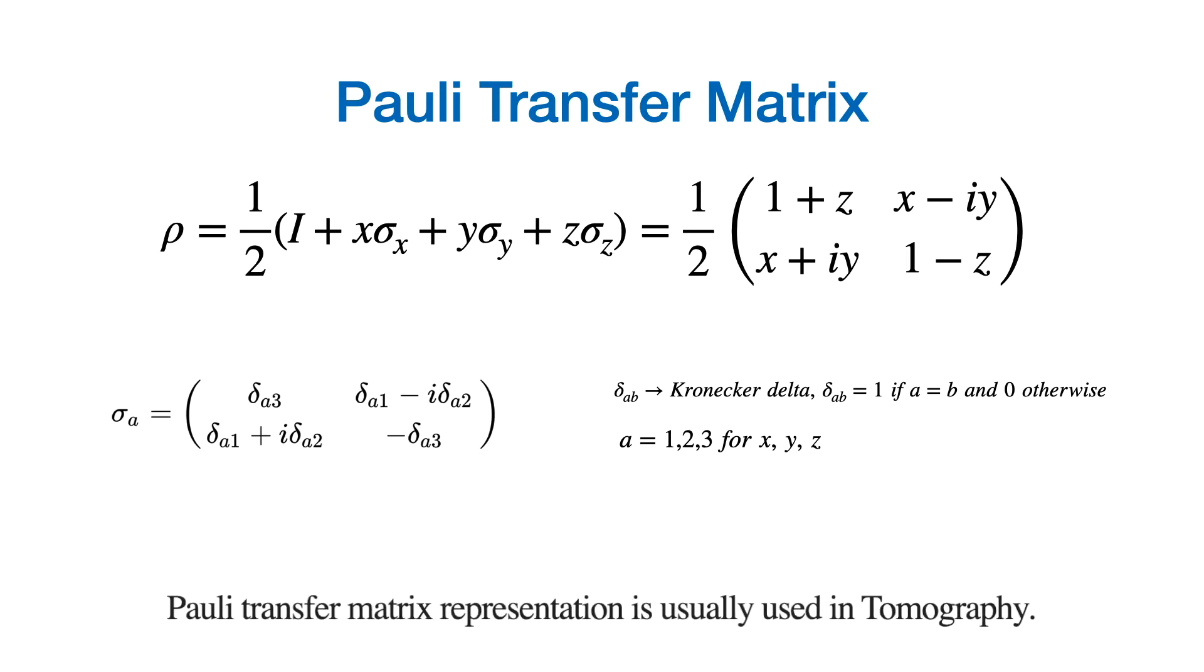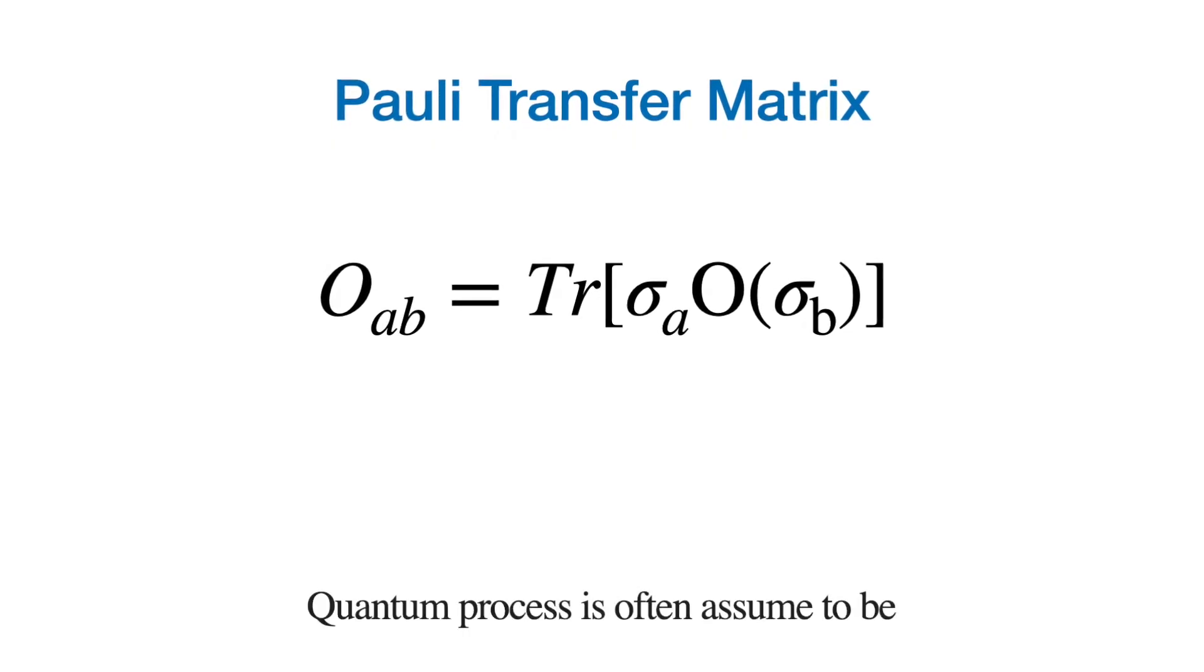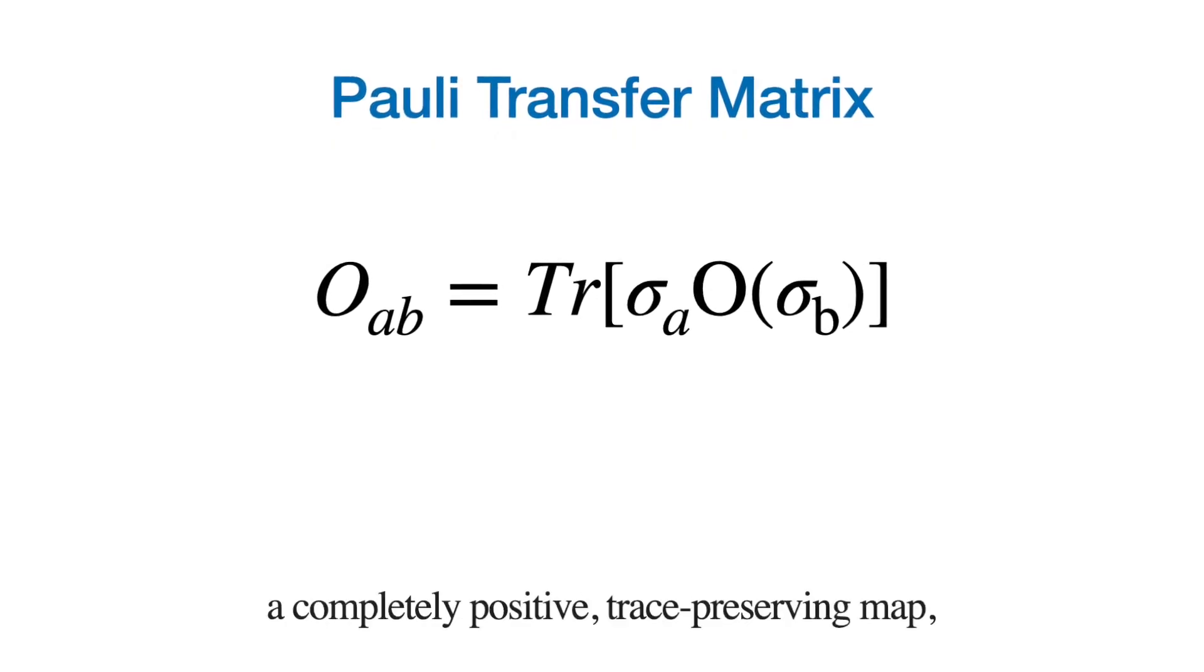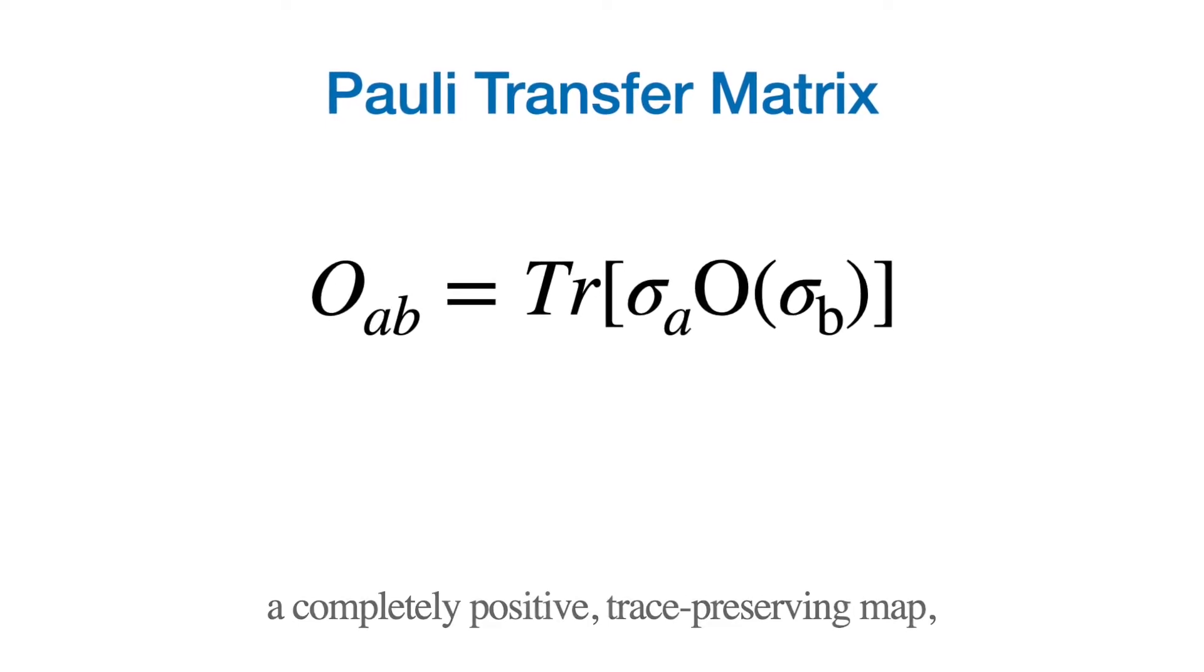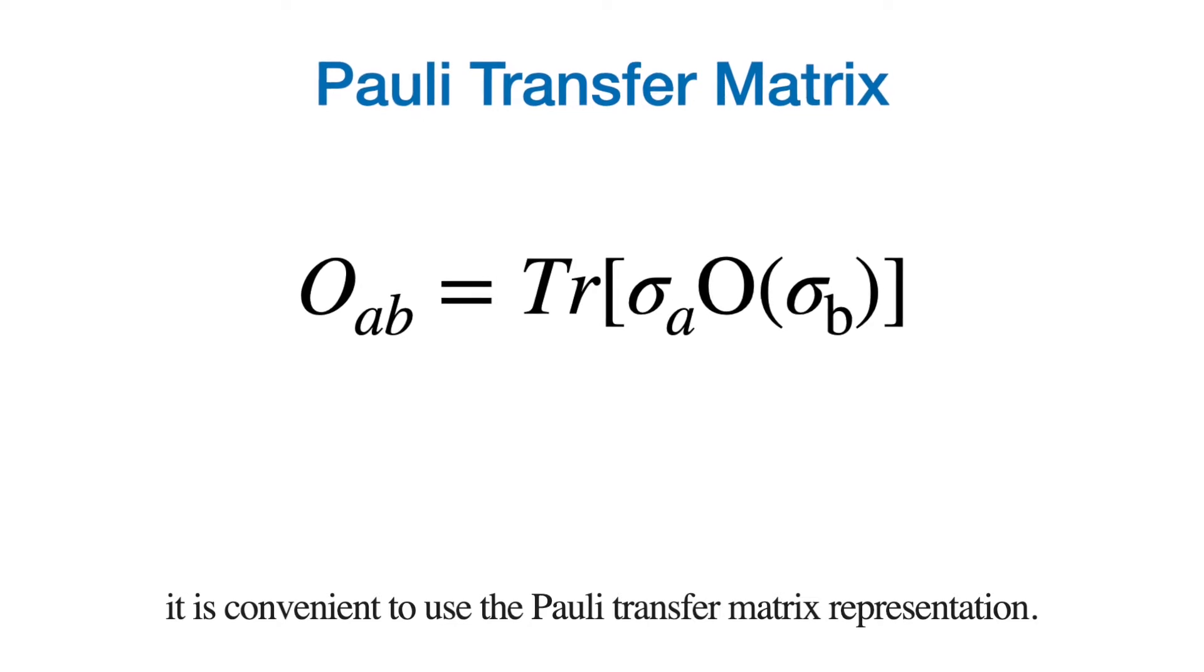Pauli transfer matrix representation is usually used in tomography. Quantum process is often assumed to be a completely positive trace-preserving map. It is convenient to use Pauli transfer matrix representation.